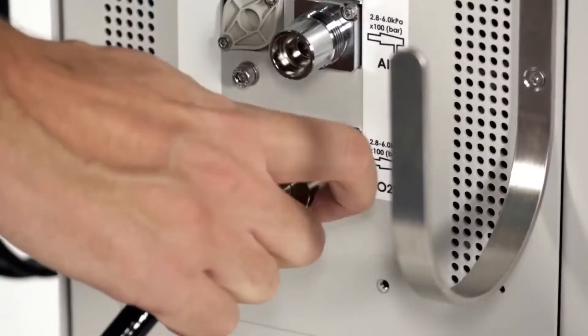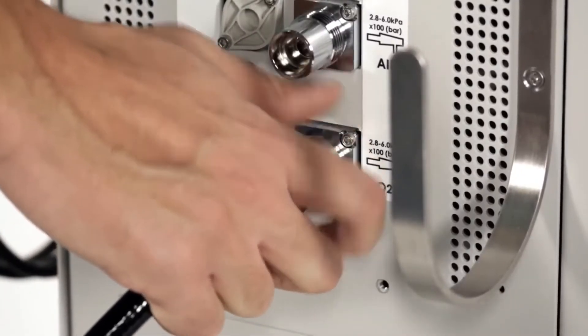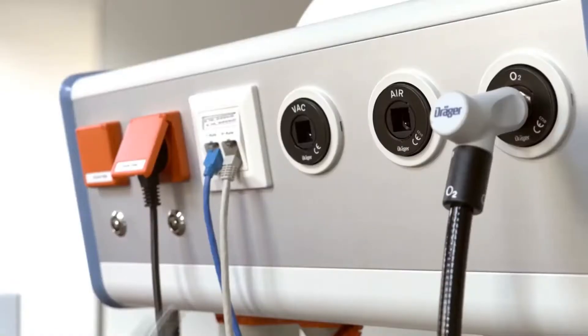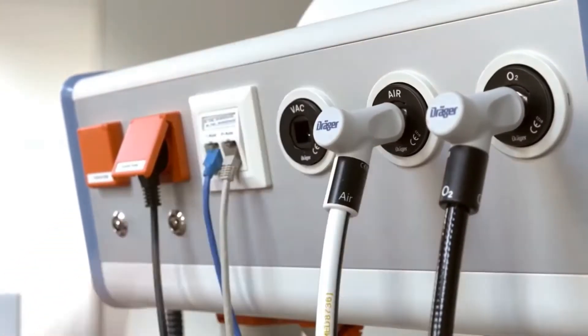Connect the pipeline hoses for oxygen, nitrous oxide and medical air to the outlets on the rear side of the machine. Plug the hoses into the relevant outlets in the wall.